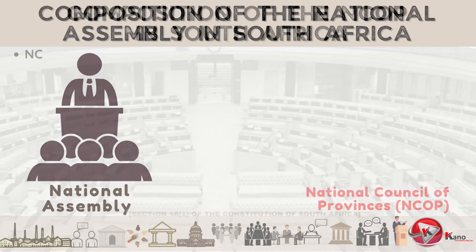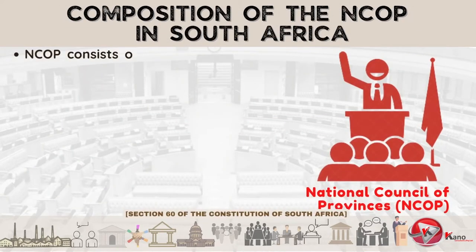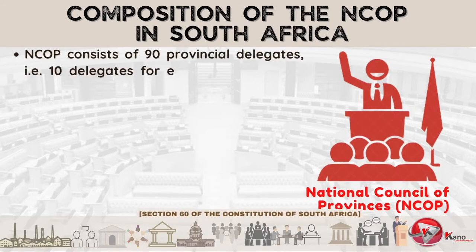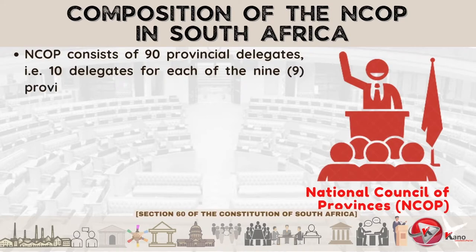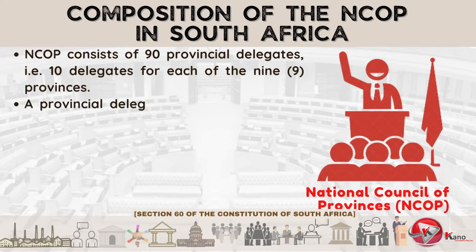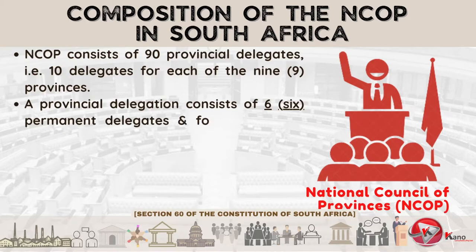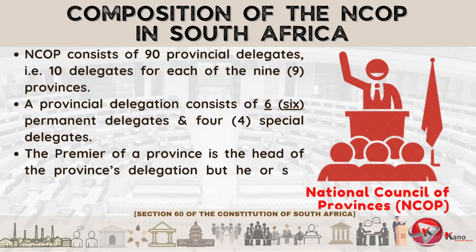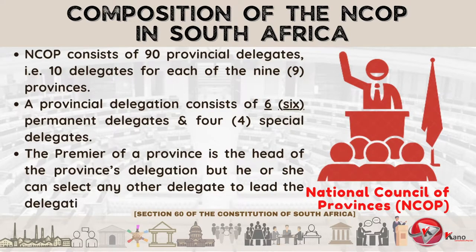The NCOP, on the other hand, consists of 90 provincial delegates — that is, 10 delegates for each of the nine provinces. A provincial delegation consists of six permanent delegates as well as four special delegates. The Premier of a province is the head of the province's delegation; however, he or she can select any other delegate to lead the delegation in his or her absence.